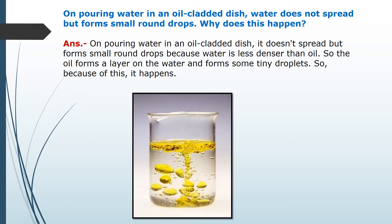On pouring water in an oil-cladded dish — meaning a dish first spread with oil — water does not spread but forms small round drops. This happens because water is less dense than oil. The oil forms a layer on the water, resulting in the formation of small round drops.